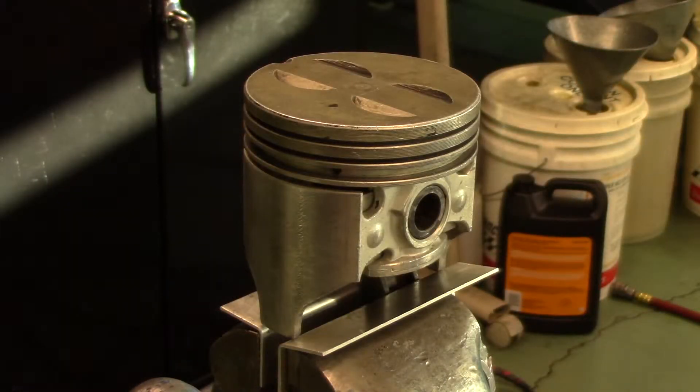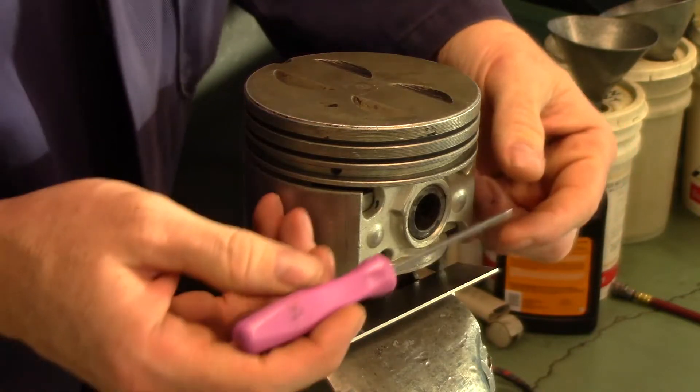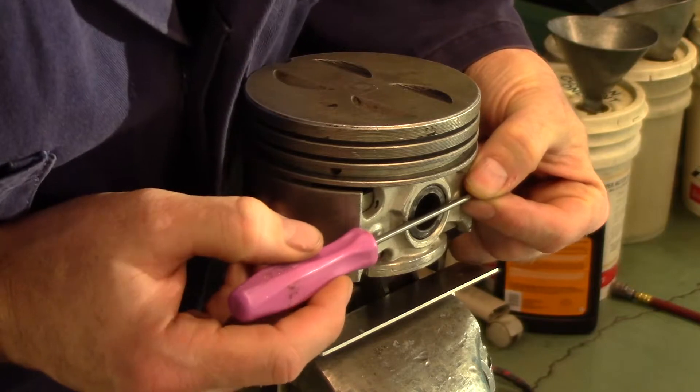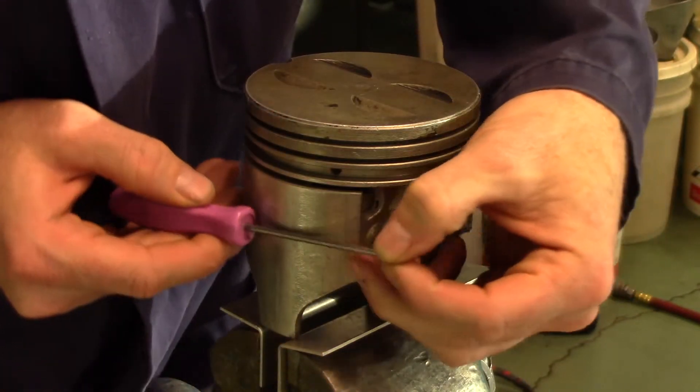An alternative method to measuring piston to cylinder bore clearance is called the direct method. This method requires less steps and offers fewer opportunities for mistakes to be made.